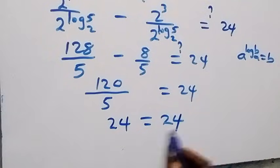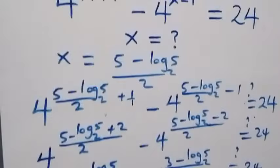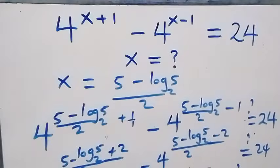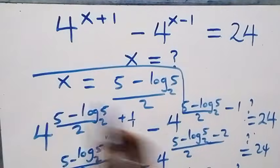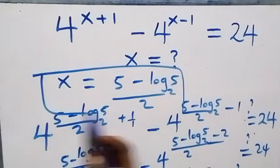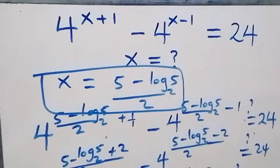120 over 5 is 24, which equals 24 on the right-hand side — left-hand side equals right-hand side. Hence, we conclude that x equals (5 minus log₅2) over 2 satisfies the given problem. Thank you for watching. Don't forget to subscribe for more videos, turn on your notification bell, share this video, give it a thumbs up, and put your comment below. See you next class — bye for now.